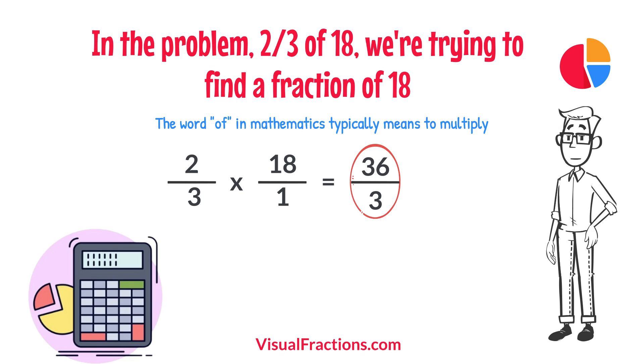To find the final answer, divide the numerator by the denominator. So, 36 divided by 3 equals 12.